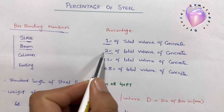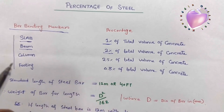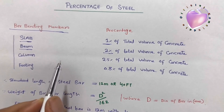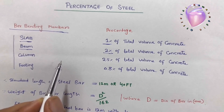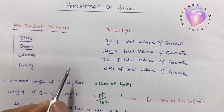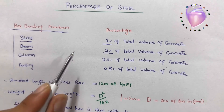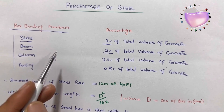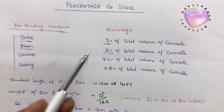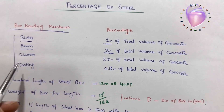The next structure is the beam. For a beam, we use two percent of the total volume of concrete. To get the volume of the beam: length of the beam × depth of the beam × width of the beam gives the total volume. From that total volume of concrete, you can find the total steel reinforcement, which is two percent.